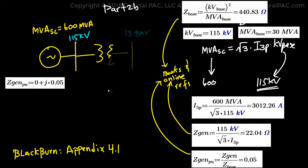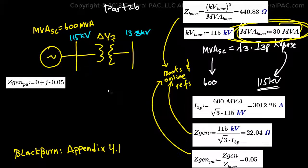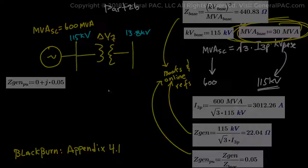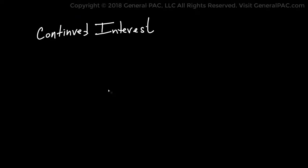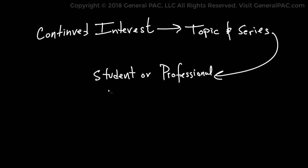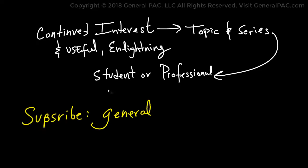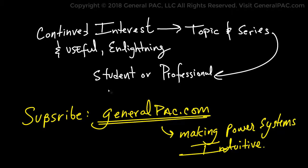In part 2b, we shall calculate the impedance values for the delta-y transformer and explain why we selected the 30 MVA power base. We hope you have a continued interest in this topic and series as a student or professional. Please consider subscribing to GeneralPAC.com. Making power systems intuitive.